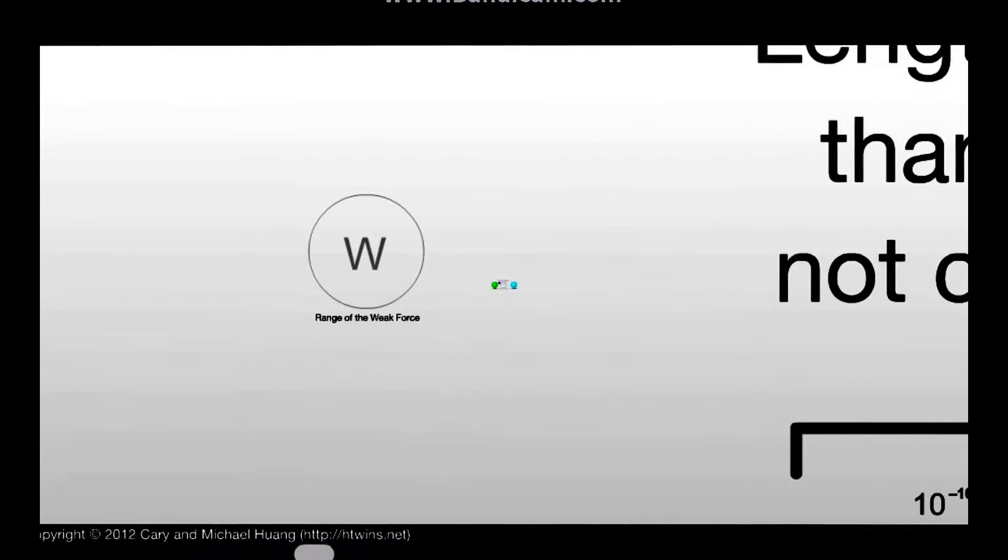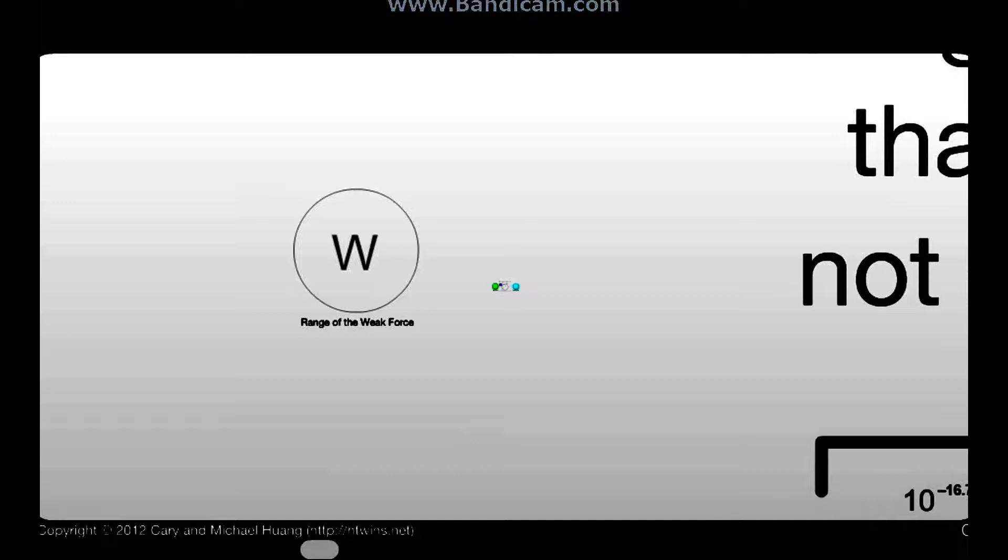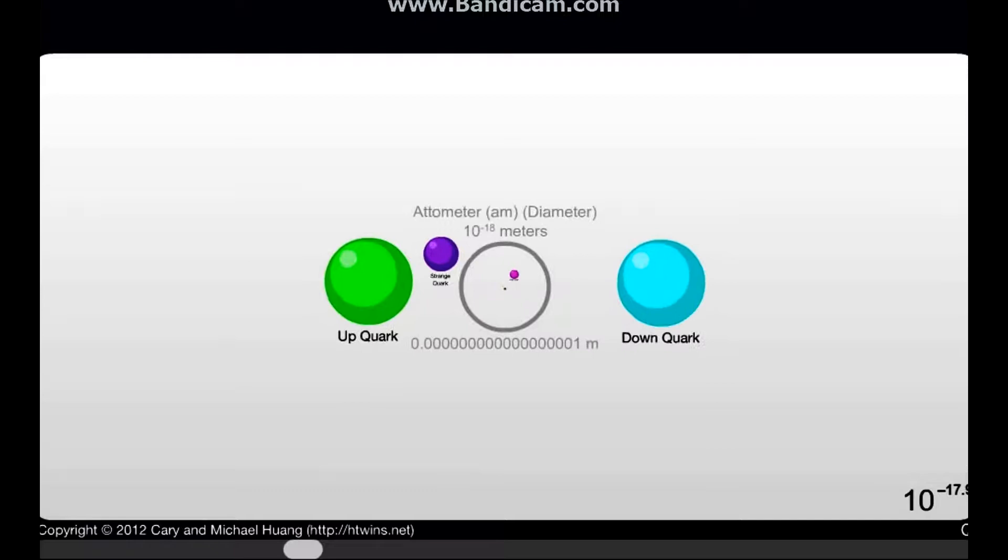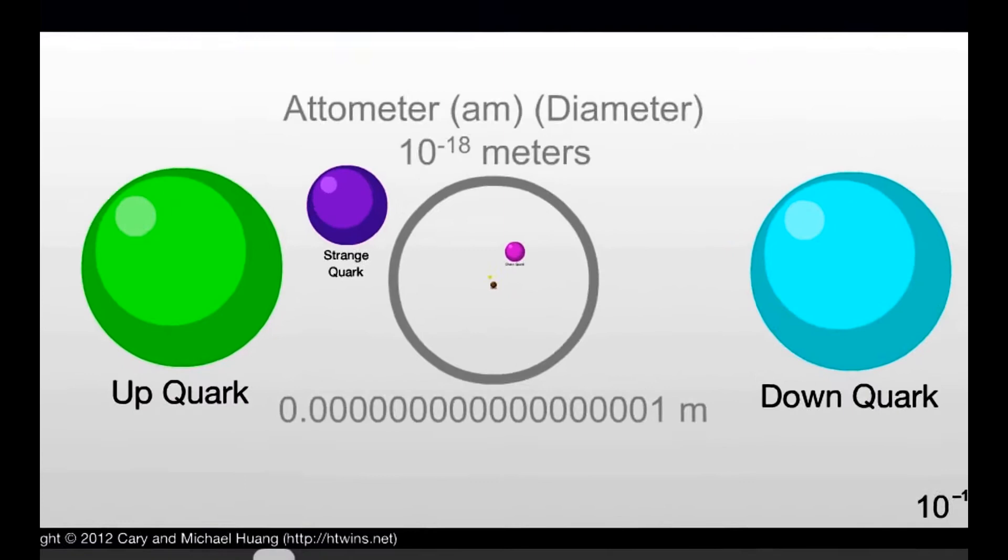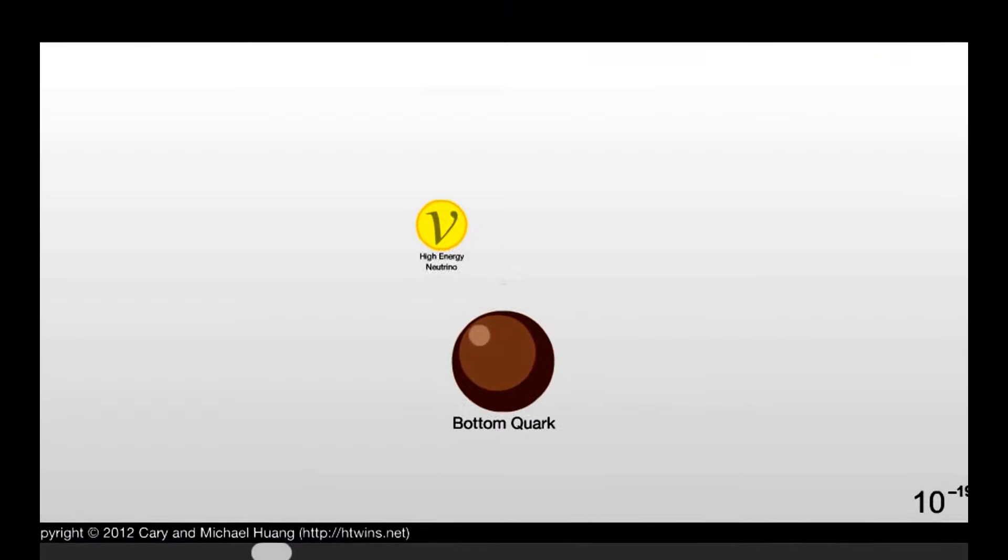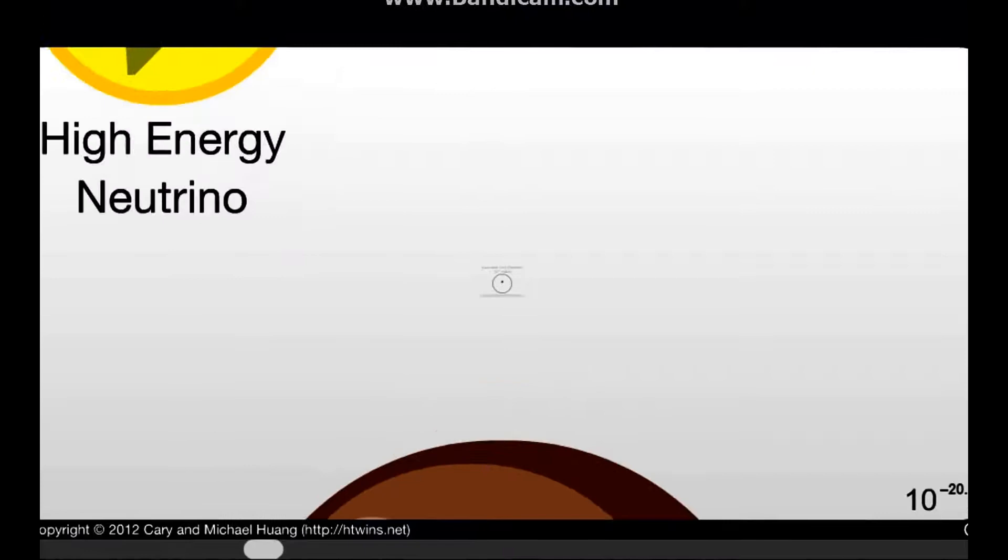Proton. Neutron. What's bigger? They're the same. Okay. Never mind. God. How do we know that stuff this small even exists? How far did humans have to go to learn that stuff exists? Range of the weak force. I don't know what the weak force is.